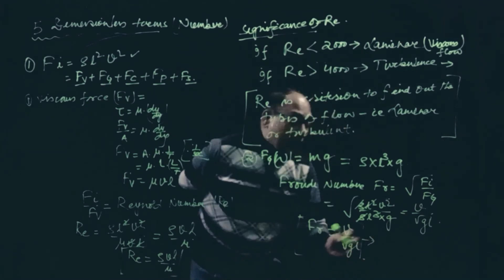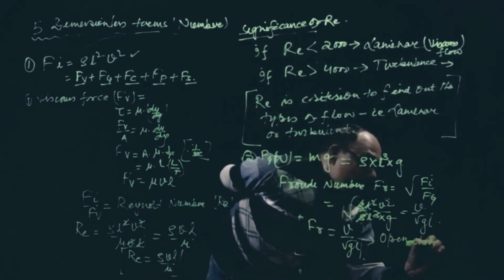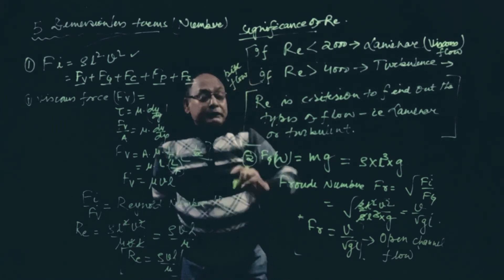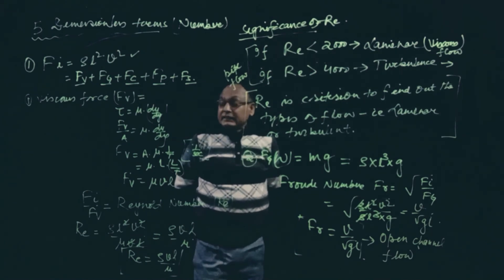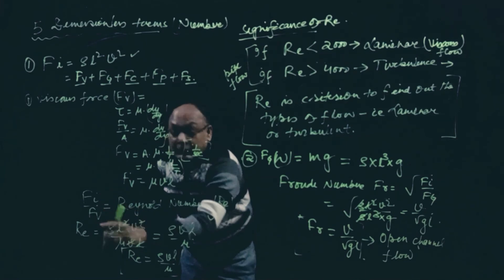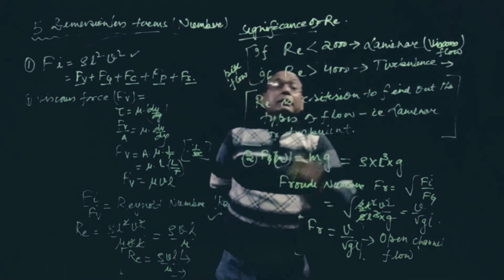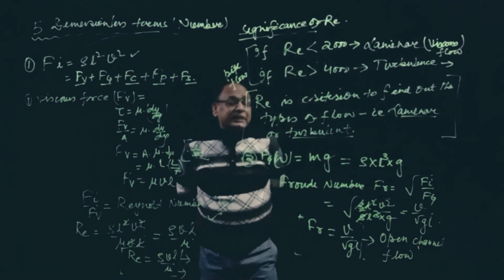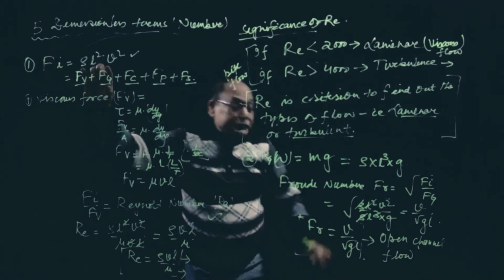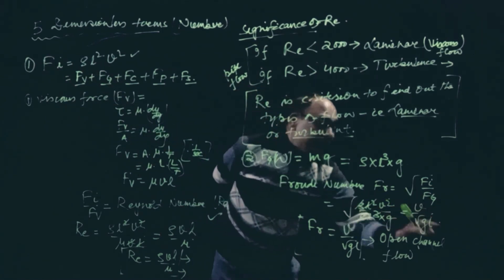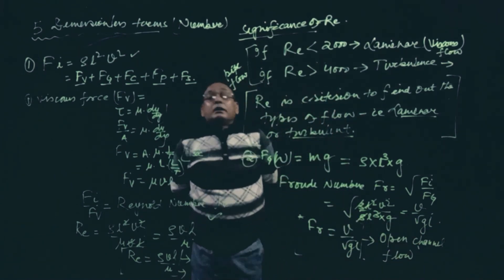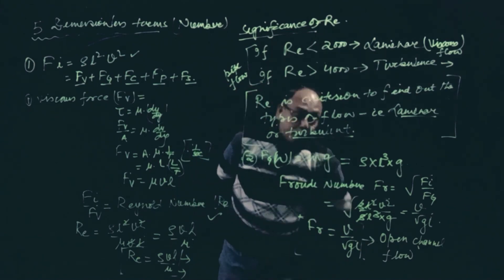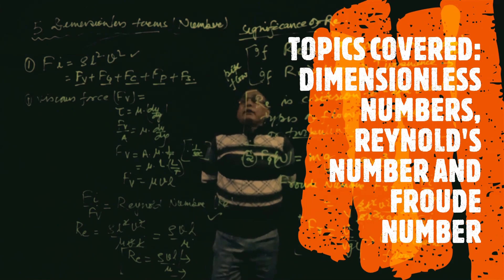This Froude number is used for open channel flow — it determines critical, subcritical, or supercritical flow types. So far we have discussed two dimensionless numbers: Reynolds number Fi/Fv = ρVL/μ, used to find laminar or turbulent flow (pipe flow); and Froude number √(Fi/Fg) = V/√(gL), used for open channel flow and rivers. The types of open channel flow are decided by Froude number. The remaining dimensionless numbers will be discussed in the next class. Thank you.